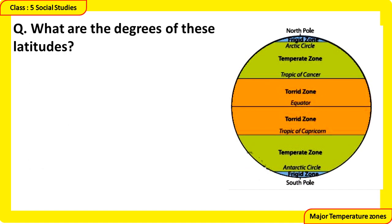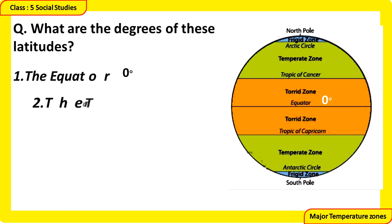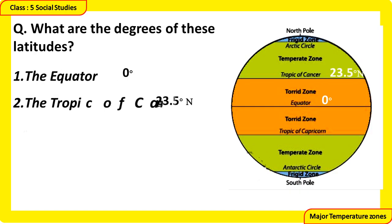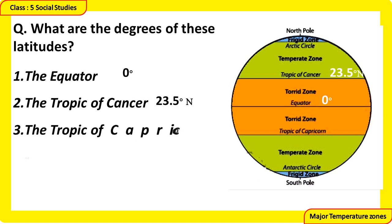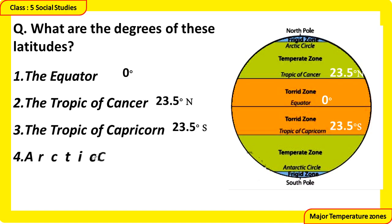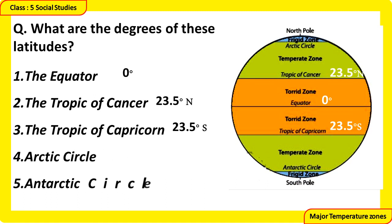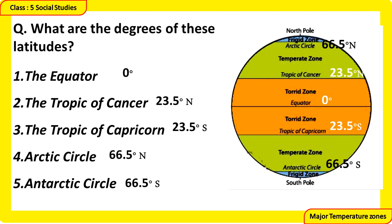What are the degrees of these latitudes? The Equator is at 0 degrees. The Tropic of Cancer is at 23.5 degrees north. The Tropic of Capricorn is at 23.5 degrees south. The Arctic Circle is at 66.5 degrees north, and the Antarctic Circle is at 66.5 degrees south.